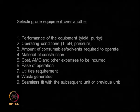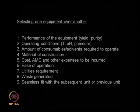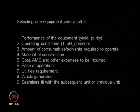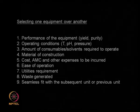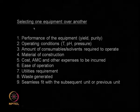How much solvents and consumables are required will decide equipment selection. Material of construction is another factor: can I use mild steel, or do I require stainless steel, glass-lined steel, or titanium? Each type of material of construction leads to a different total cost of equipment. What material of construction I use is an important parameter in selection. Then comes the actual cost of the equipment, the annual maintenance contract, and other ongoing expenses.